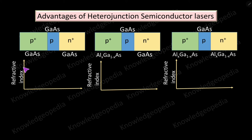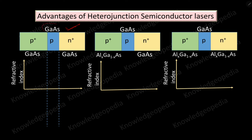The refractive index is plotted along the y-axis and the different regions of the semiconductor laser are along the x-axis. The active region is bounded by two dotted blue lines, with the other two regions on either side. In the homojunction semiconductor laser, all three layers are made up of the same material — gallium arsenide — with only a difference in doping level: the two outer regions are highly doped compared to the active region. Since all three are the same material, the refractive index should be the same throughout, but because of the high doping, the refractive indices of the p-plus and n-plus regions are slightly less than that of the active region. This variation is very small.